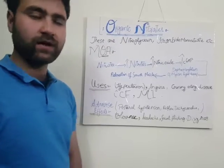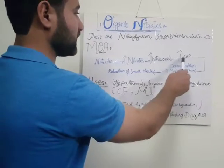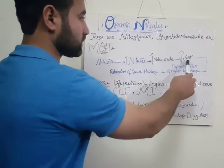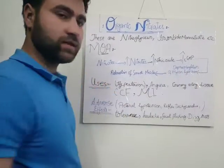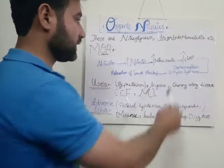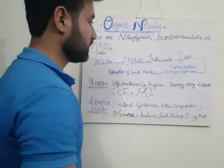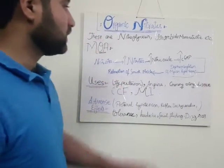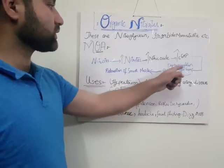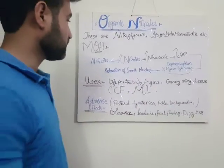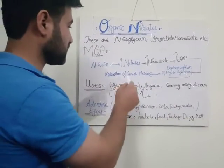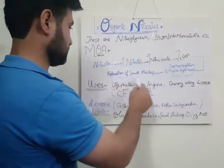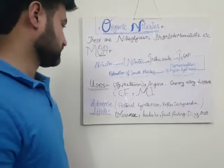The increased levels of cyclic GMP cause the dephosphorylation of the myosin light chain. Due to dephosphorylation of the myosin light chain, relaxation of the vascular smooth muscle occurs and vasodilation occurs.